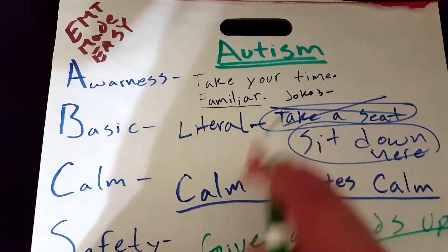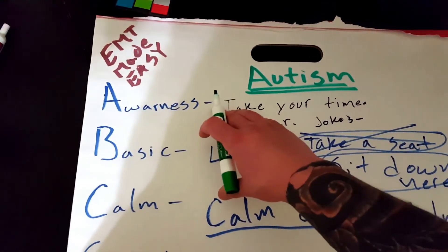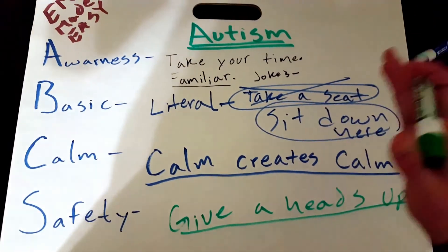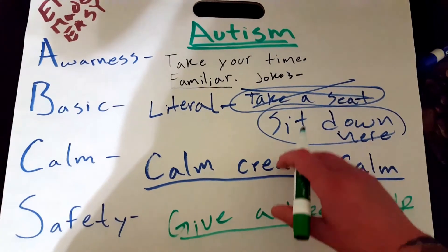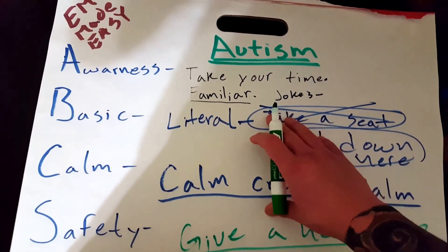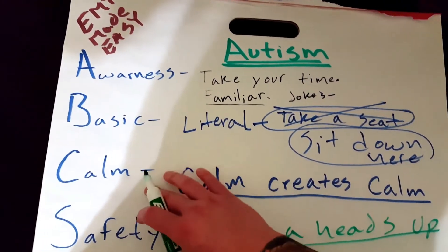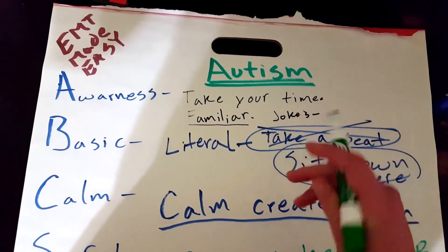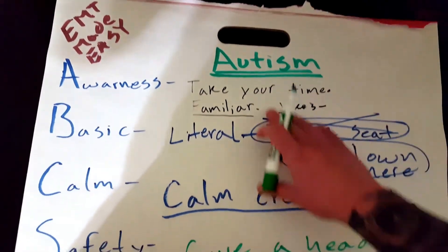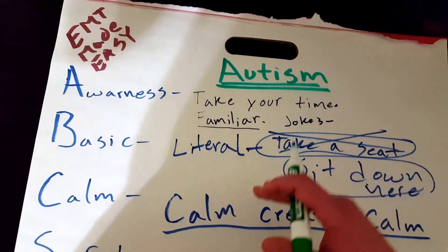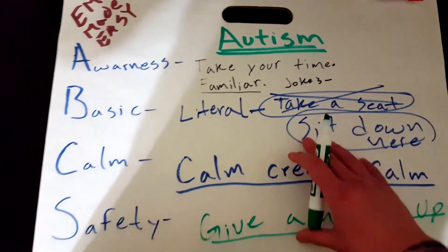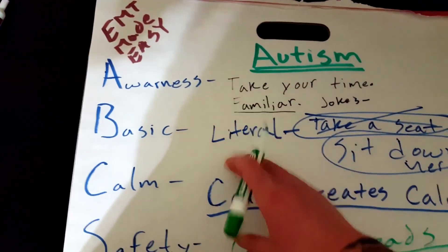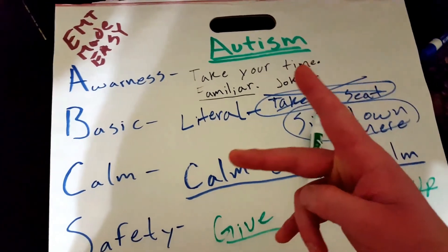Hopefully I explained this well. I always try not to overload you guys with too much information and keep it straight to the point. Just remember the ABCS, and if you have any questions, leave a comment below. Sometime down the road I will make a video on autism, the different levels, and what to expect, but for the most part this is what you need to know as far as how to approach a patient that has autism. See you guys later.